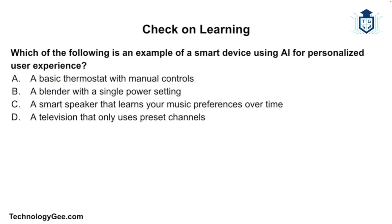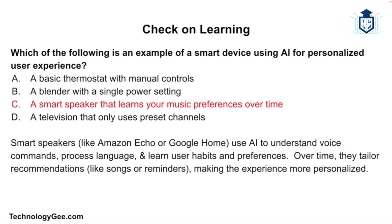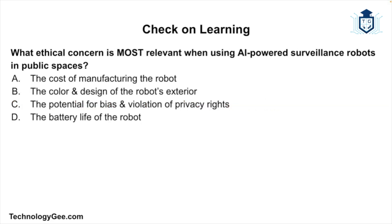Question two: which of the following is an example of a smart device using AI for a personalized user experience? The correct answer is: a smart speaker that learns your music preferences over time. Smart speakers like Amazon Echo or Google Home use AI to understand voice commands, process language, and learn user habits and preferences — tailoring recommendations like songs or reminders to make the experience more personalized.